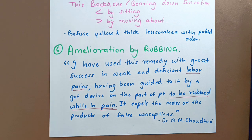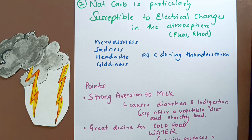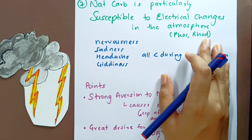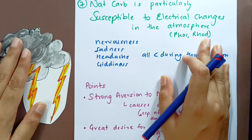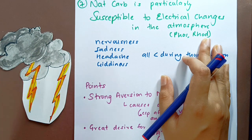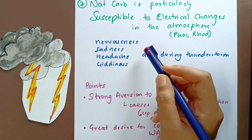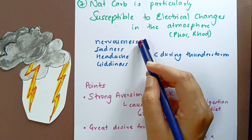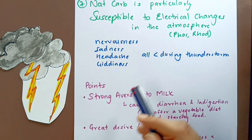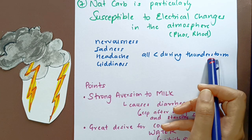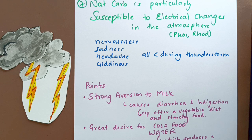The seventh and last characteristic is that Natrium Carb is particularly susceptible to electrical changes in the atmosphere, like Phosphorus and Rhododendron. Any kind of electrical change can produce nervousness, sadness, headache and giddiness. All these symptoms are aggravated during thunderstorms because of the electrical changes in the atmosphere.